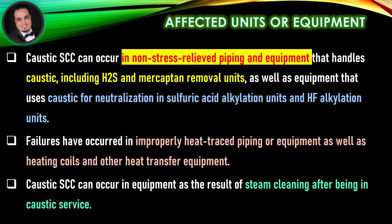Affected units or equipment: Caustic stress corrosion cracking can occur in non-stress-relieved piping and equipment that handles caustic, including hydrogen sulfide and mercaptan removal units, as well as equipment that uses caustic for neutralization in sulfuric acid alkylation units and hydrofluoric acid alkylation units. Failures have occurred in improperly heat-traced piping or equipment, as well as heating coils and other heat transfer equipment. Caustic stress corrosion cracking can also occur as the result of steam cleaning after being in caustic service.